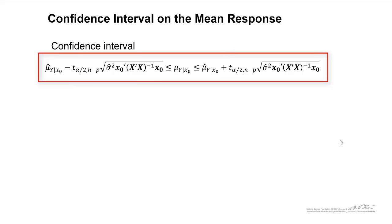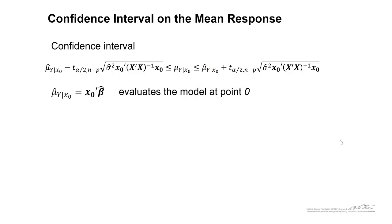We have this pretty complex formula here. It's centered about the mean response. So we can evaluate that. We can evaluate the model at point zero. That's just x naught transpose times beta hat. You see we have a lot of matrix multiplication going on in this formula. And so it's best to use computing tools like Excel or MATLAB or something else. And I'll show you an example of how we can do this in Excel in a moment.